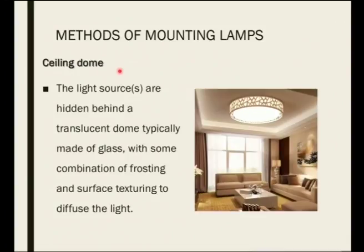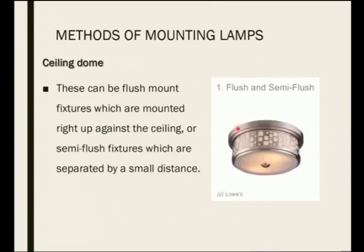The ceiling dome is the light fixed to the ceiling with a cover on top — that is what we call a dome. The light source is hidden behind a translucent dome. Translucent means light will pass through it. This will typically be made of glass, and is now also available in fiber. It can be either clear or frosted depending on the type of light needed. This ceiling dome can be flush mounted — in line with the ceiling — or it can be pushed down.